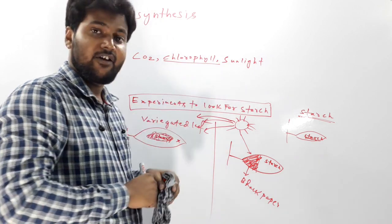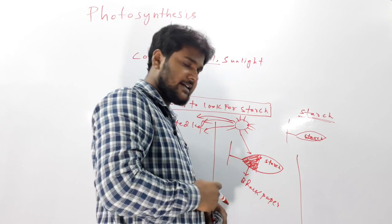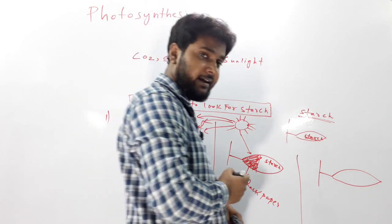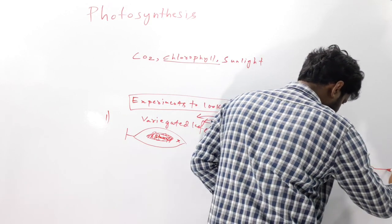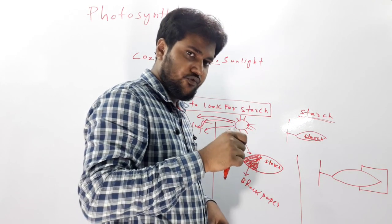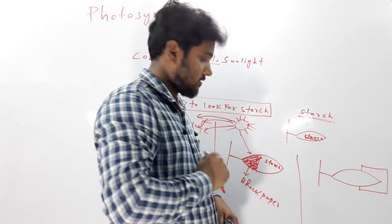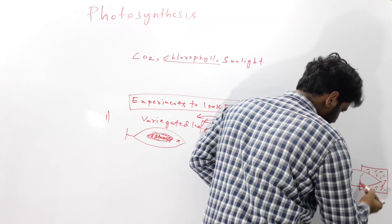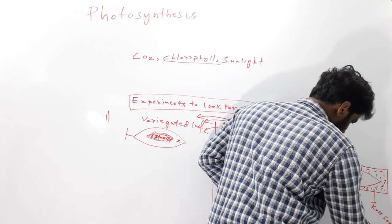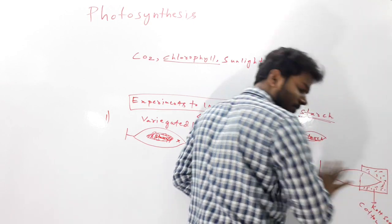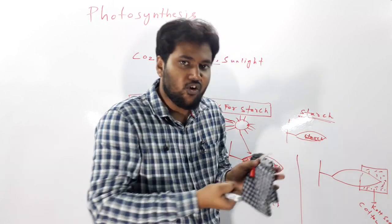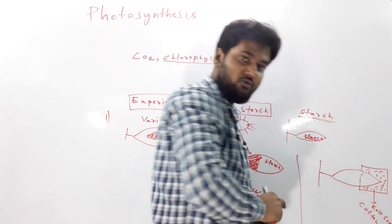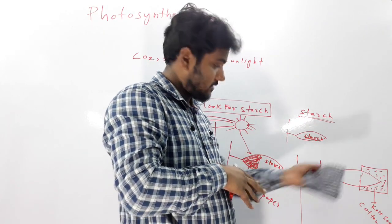In another type of experiment, we took a leaf and enclosed one portion of it inside a test tube filled with KOH-soaked cotton. KOH is a base that absorbs CO2 on contact. This layer of KOH-soaked cotton prevents CO2 from reaching the surface of the enclosed portion of the leaf.